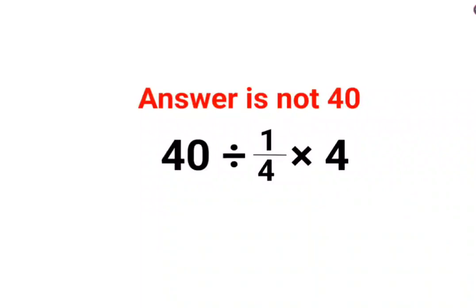Welcome everyone. A lot of people thought that the answer for this question is supposed to be 40 because they thought that this 4 and this 4 can get cancelled, so eventually we are getting 40 divided by 1. The answer for this one is just 40. No, that is incorrect.